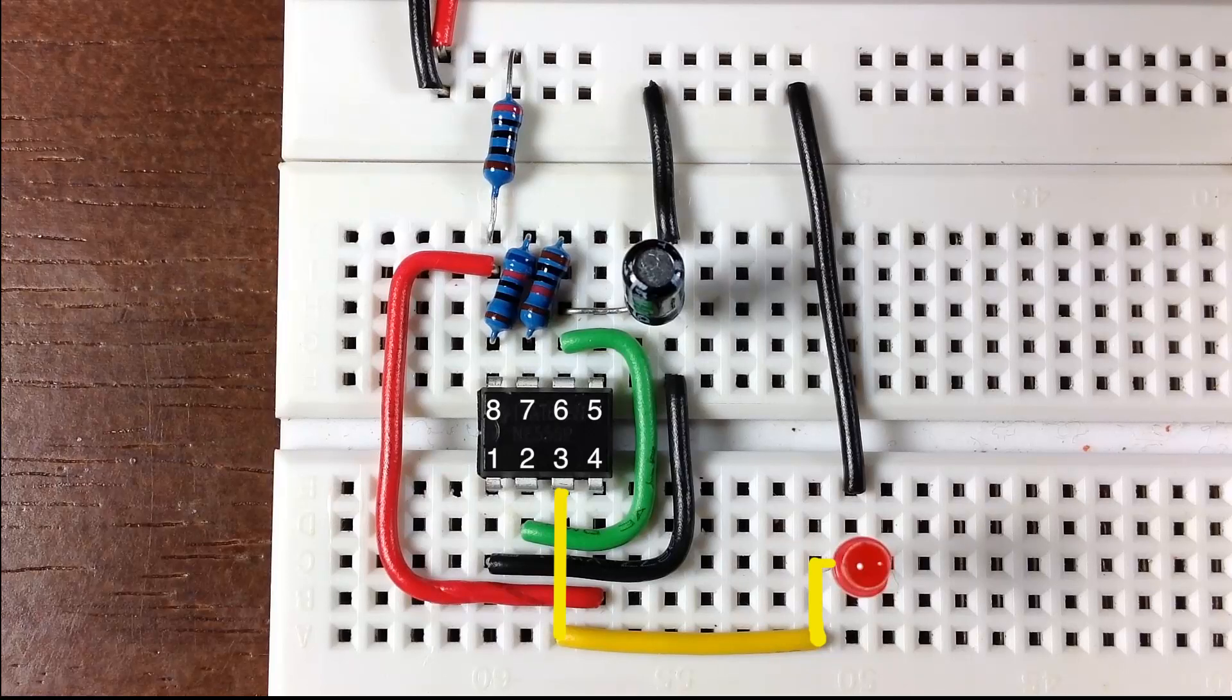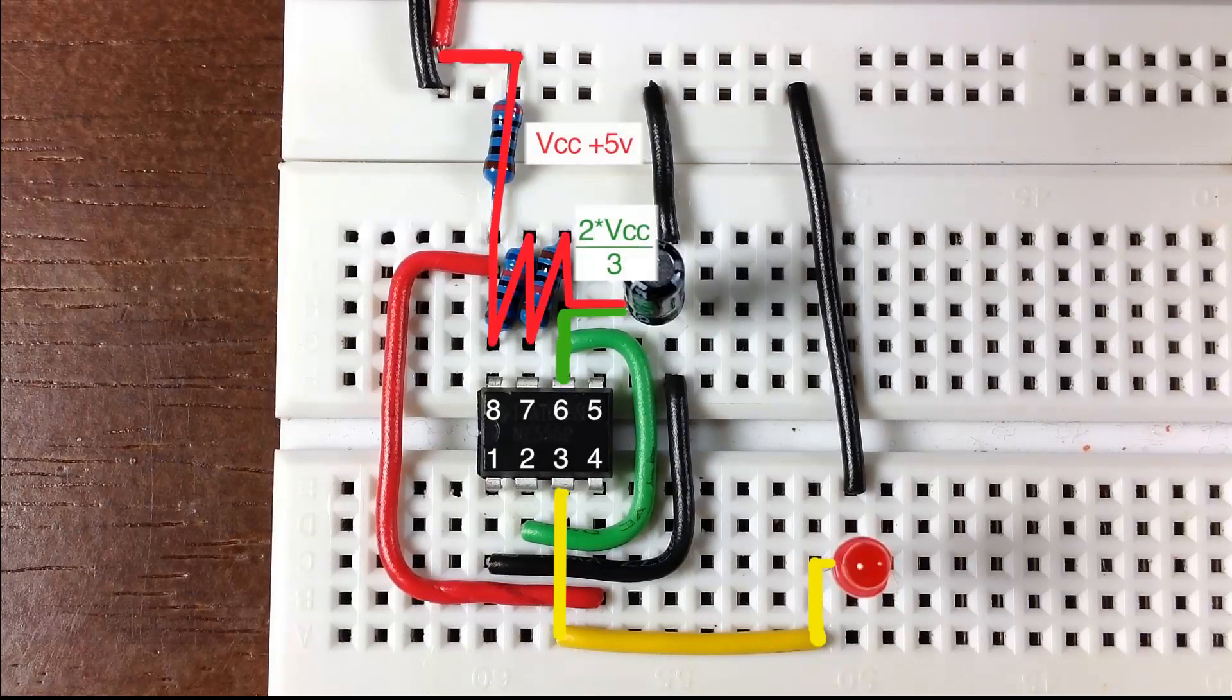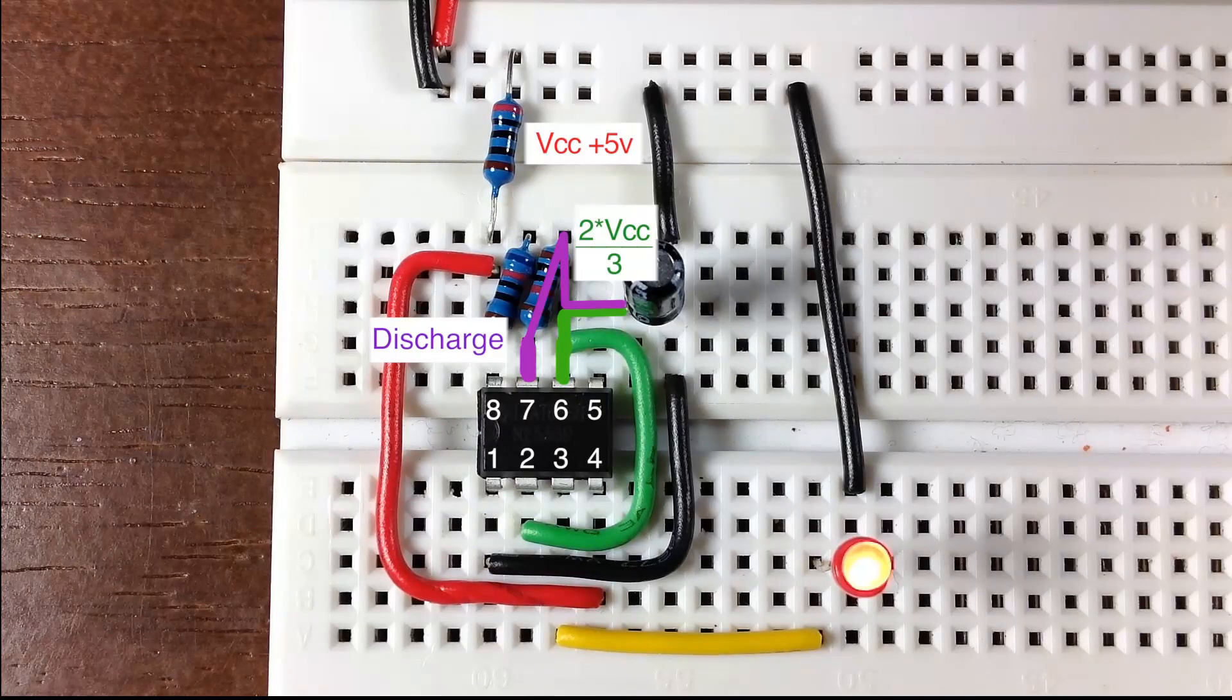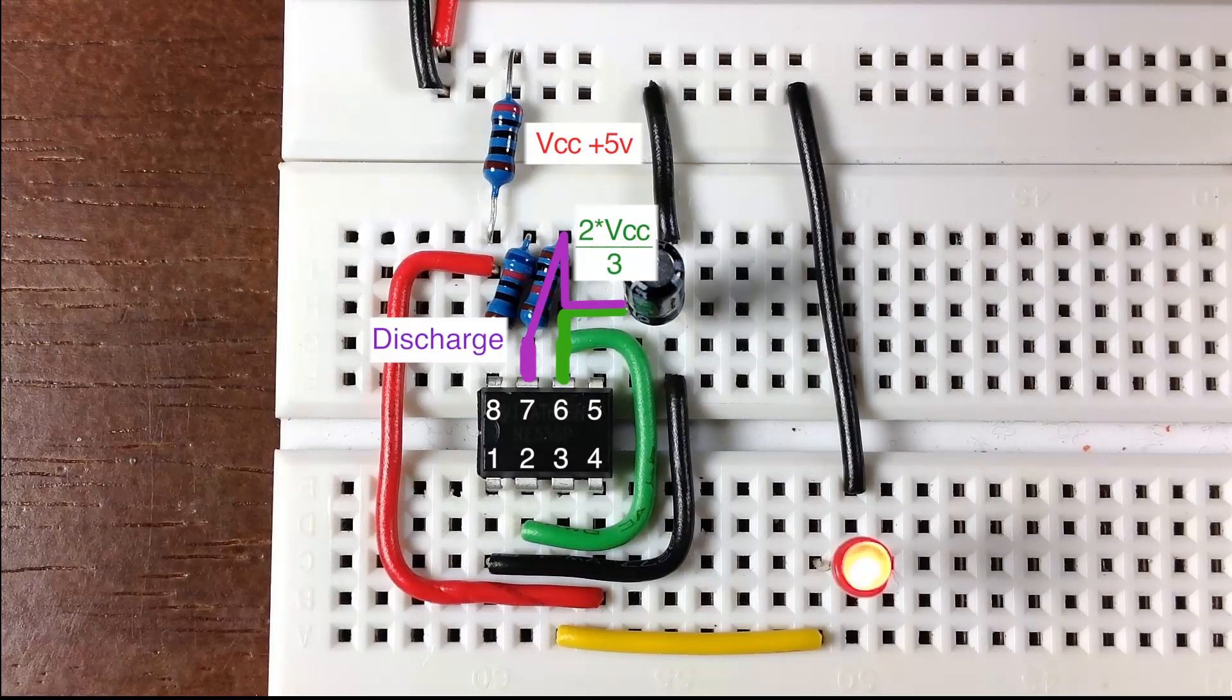When the threshold detects that the voltage of the capacitor has charged to two-thirds of the input voltage, the discharge opens to ground so that the capacitor can begin discharging and the output goes low.